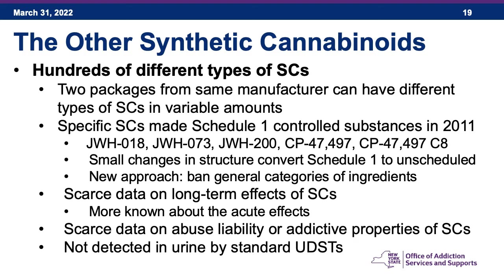There are hundreds of different types of synthetic cannabinoids — you could buy two packages from the same manufacturer and they could have different types in variable amounts, with no quality control. In 2011, specific synthetic cannabinoids were made Schedule I controlled substances — the JWH-18, JWH-73, JWH-200, CP-47,497, and CP-47,497-C8 series. However, very small changes in the structural chemical compounds can convert a Schedule I substance into an unscheduled one, which is why there are so many different types. The FDA has been trying to ban general categories of ingredients.